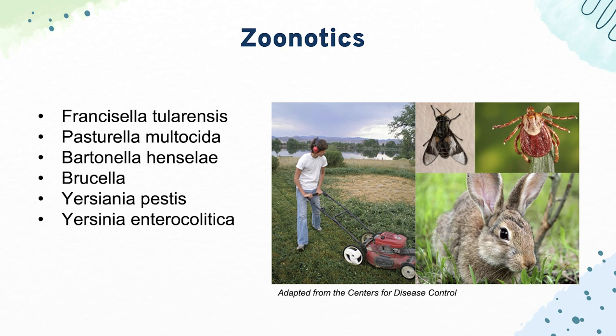Finally, we have Yersinia enterocolitica, which is often tested by having students pick between that disease and appendicitis. It can cause right lower quadrant pain like appendicitis, but this condition will often cause an acute bloody diarrhea.